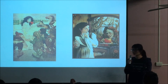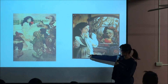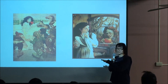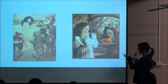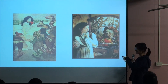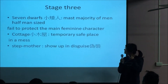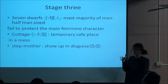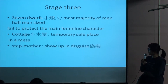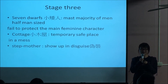Snow White goes into the woods and meets seven dwarves. They tell her not to open the door and let strangers in. But she does not let the evil queen in through the door — she lets her enter from the window. The seven dwarves represent the majority of men, and they protect the feminine character. The cottage represents a safe space, but it is actually a mess, which represents the mess in the human psyche.